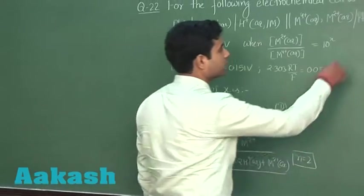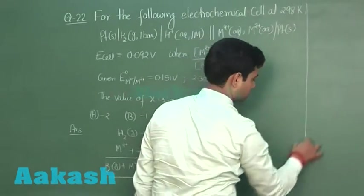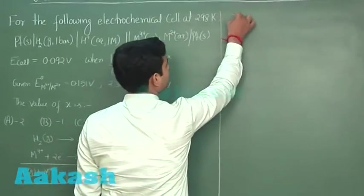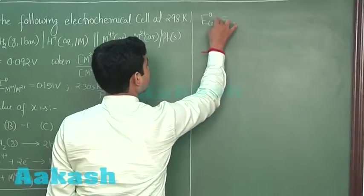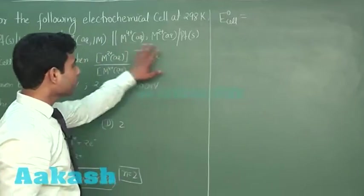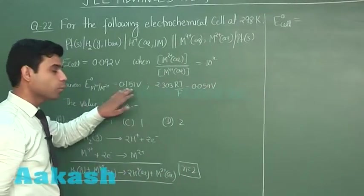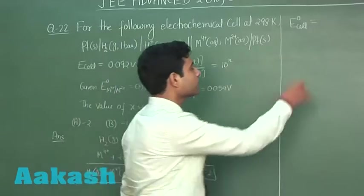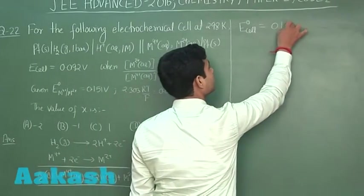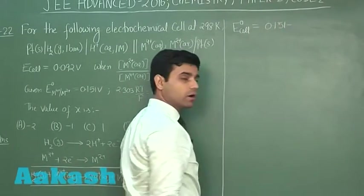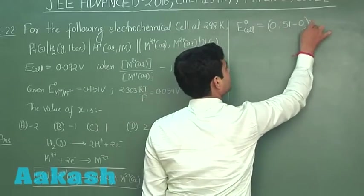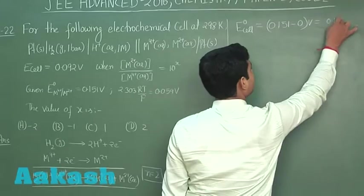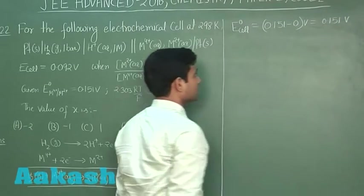Now, what will be E naught cell? E naught cell is E naught of cathode - cathode is M 4 plus to M 2 plus, which is 0.151 volt. So E naught of cathode is 0.151 minus E naught of anode. Anode is 0 volt. That is equal to 0.151 volt. This is E naught cell.